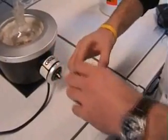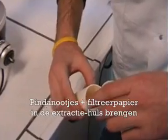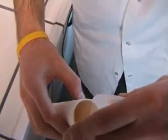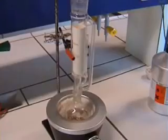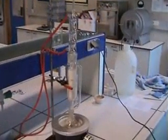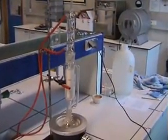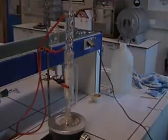De fijngemalen pindanootjes en het filtreerpapier brengen we vervolgens in de extractiehuls. Deze extractiehuls wordt dan geplaatst in het soxletapparaat. Tot slot plaatsen we de liebigkoeler op het soxletapparaat en is de proefopstelling klaar voor gebruik.